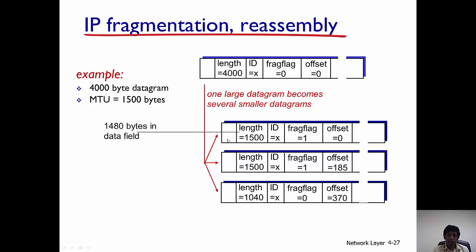There are 1480 bytes in the data field because remember that there are 20 bytes in the header, and the fragment flag is set to one. Next, there is an offset that is for the next datagram that is sent out or this next fragment of this datagram. The IP offset is 185.